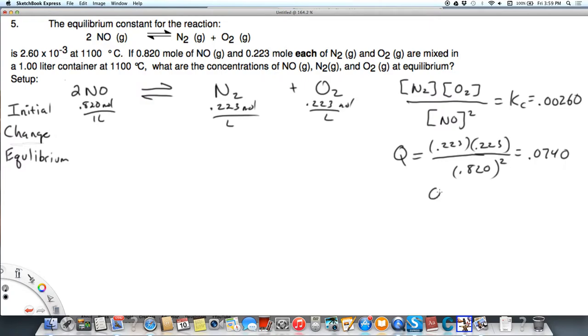So that means that Q is greater than KC. And what that means is that the top is too big. So we need to go to the left here. That means we have too many products. So that's what has to get used up, and we have to go up with our reactant. Again, we have too much products. That's why Q is greater than K. So we need to go to the left.